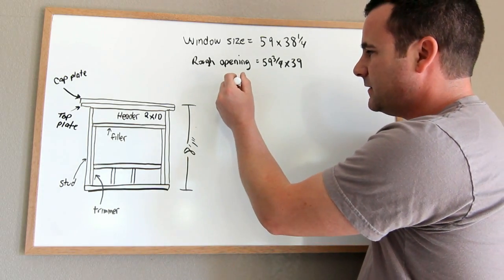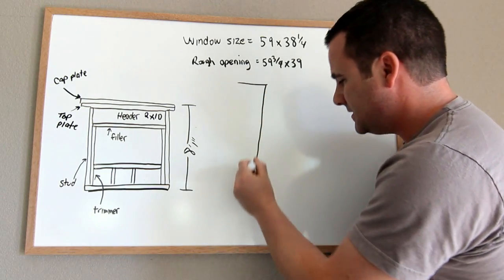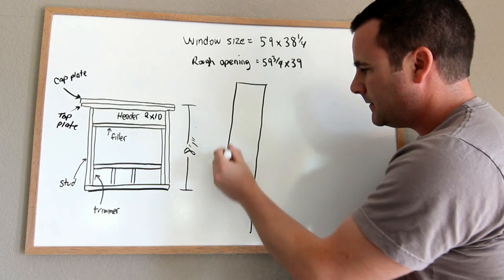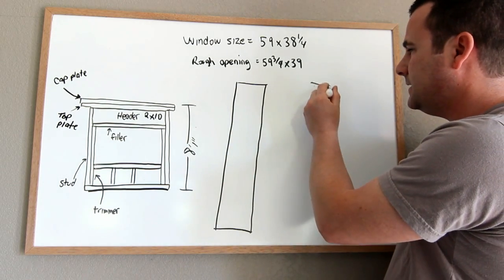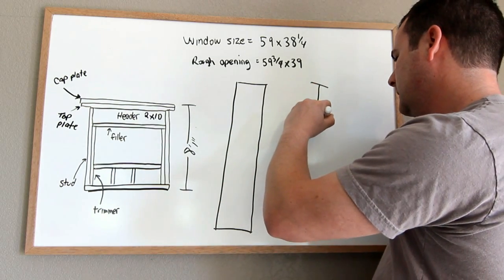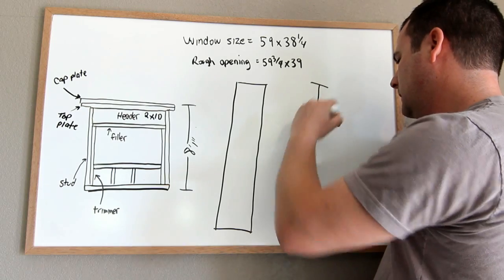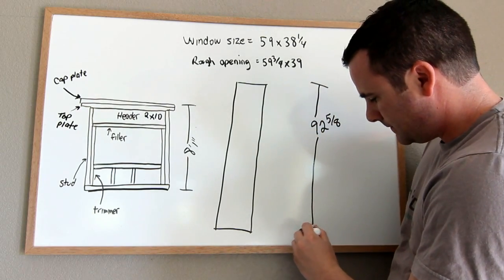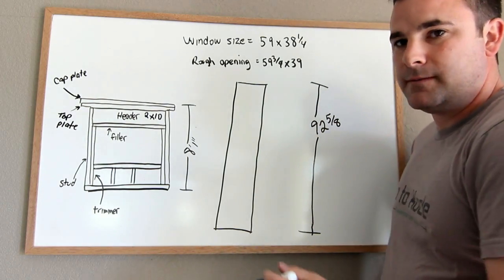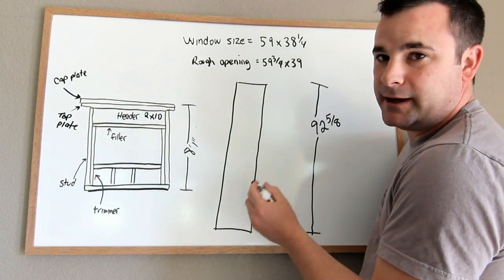So let's say for example, this is your stud. The full length of that is 92 and 5 eighths.